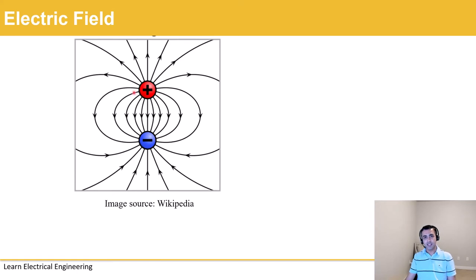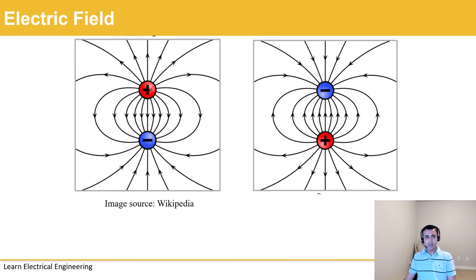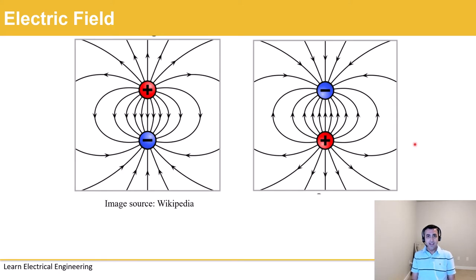Let's consider a case where we have two charges — a positive charge and a negative charge — located in close proximity to each other. There's some electric field which exists between those two charges, and the electric lines of force start from the positive charge and end at the negative charge. Now if we change the location of those two charges, the electric lines of force flip their direction as you can see in these pictures. However, there is no radiation happening because those electric charges are not moving yet.